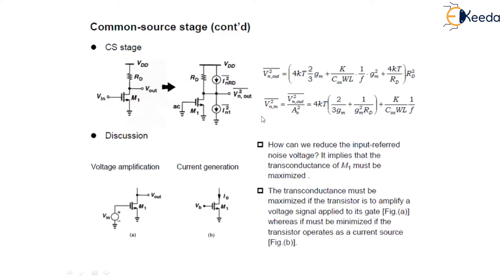Now let us take common source stage. The input-referred noise voltage per unit bandwidth of a simple common source stage is what we are doing: we are first taking the equivalent circuit for the common source stage and finding the equivalent sources of the noise, that is one due to the transistor and one due to the resistor, that is the thermal noise due to both of them and the other one is the flicker noise.